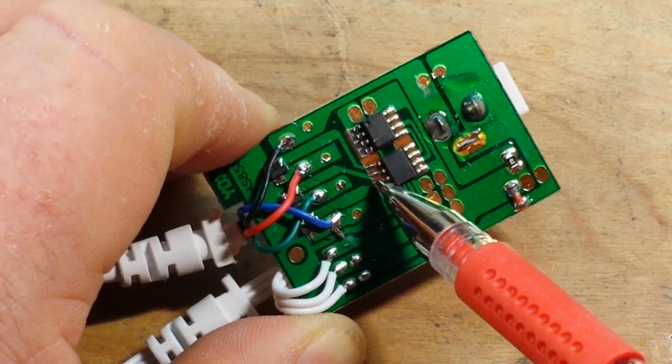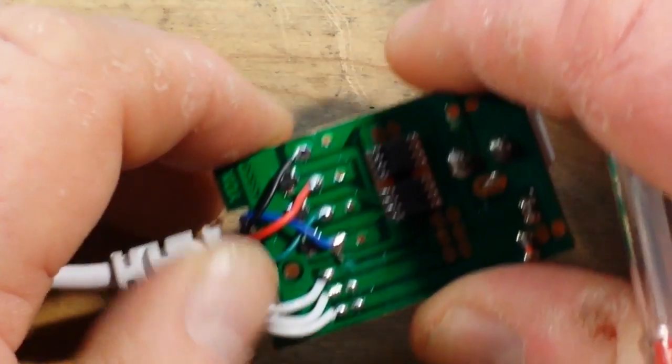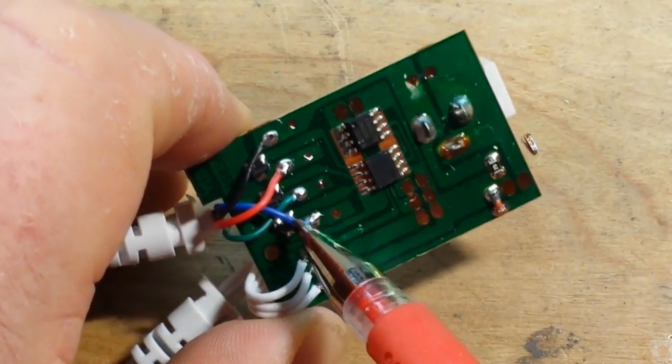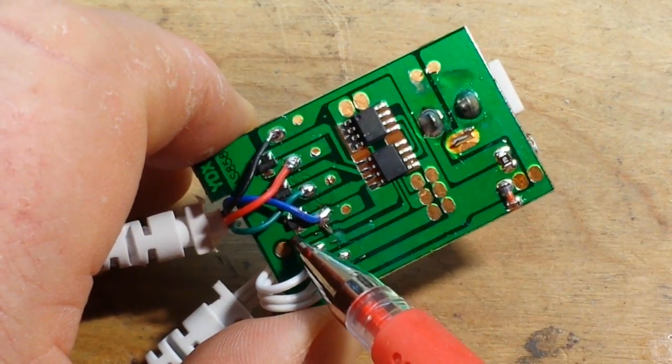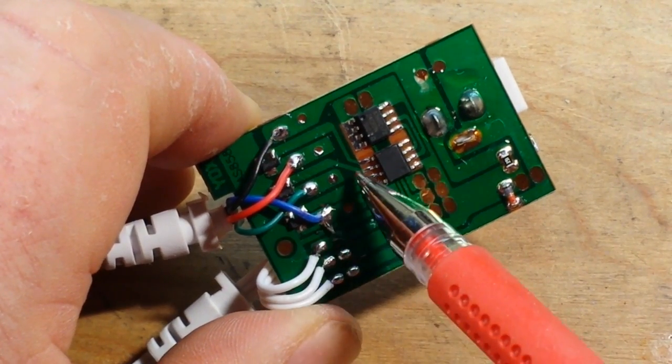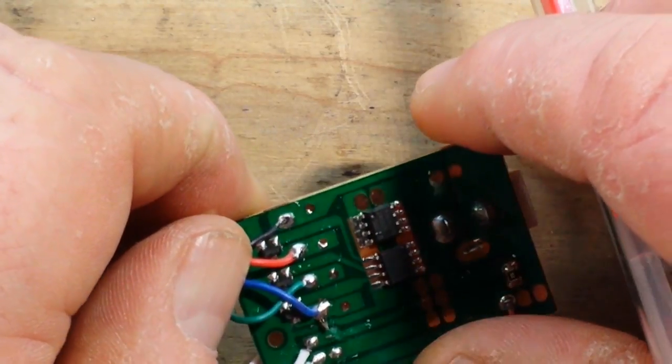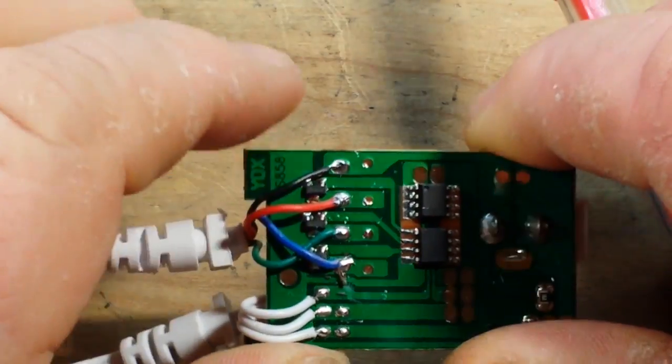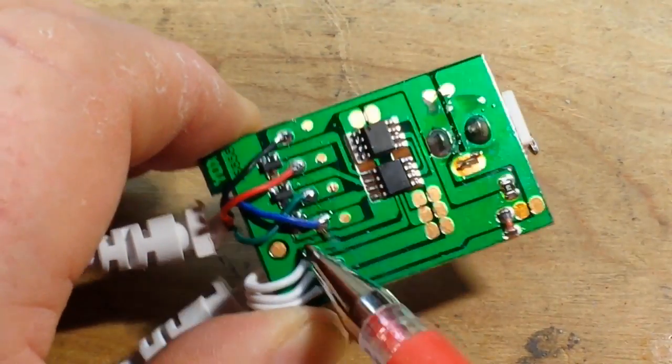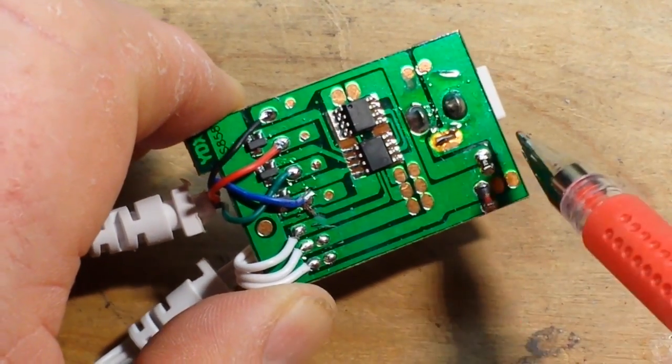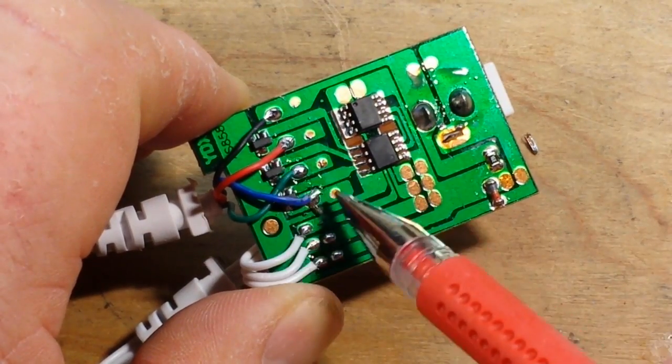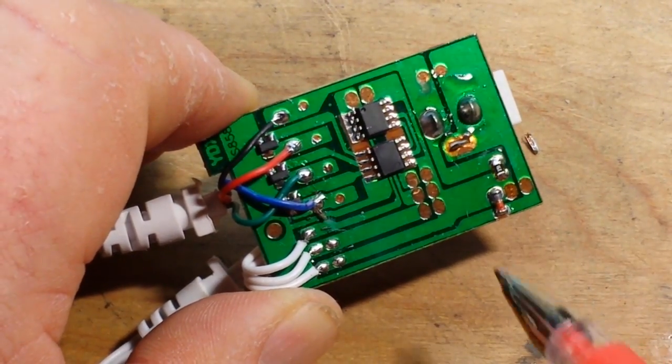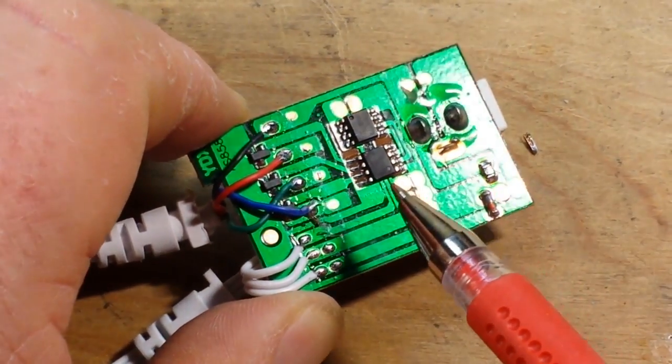And if we follow that over here, we have two lines coming out from the microcontroller. One going to what I believe is the ground plane, and the other one coming over here to, what's hiding down in there? Oh look at that, a couple of transistors hidden down in there.